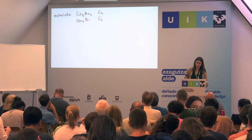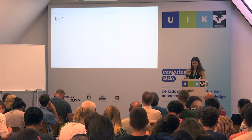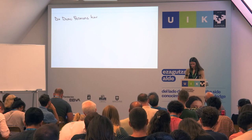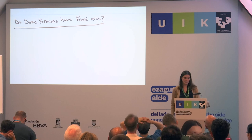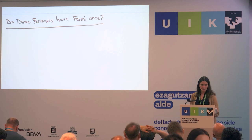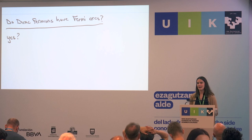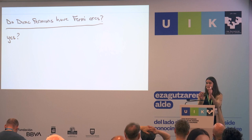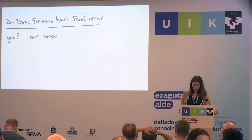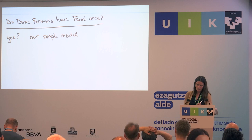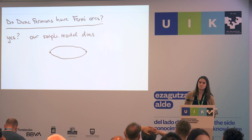So the next question is: do Dirac fermions have Fermi arcs? This is actually a pretty subtle question. By now the answer is known, but it was subtle in 2015 when I was learning about Weyl fermions and Dirac fermions. The naive answer is yes — if we go back and look at our model, it just consists of two Weyl points, and we know that Weyl fermions have Fermi arcs. In our simple model, it has Fermi arcs — it has two Fermi arcs. I have two of these Dirac points; each one is two Weyl points, so together they have two Fermi arcs.